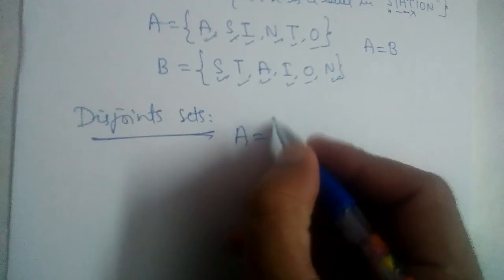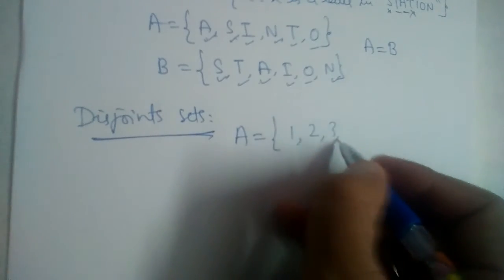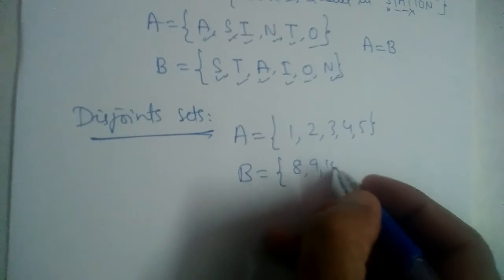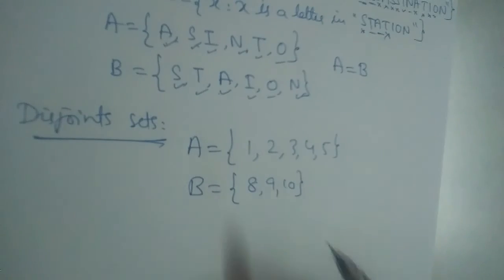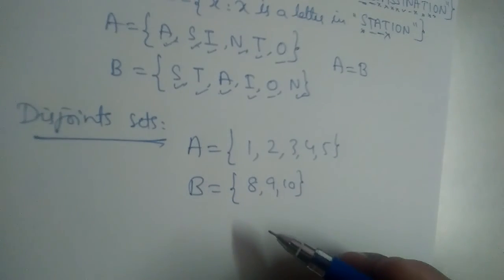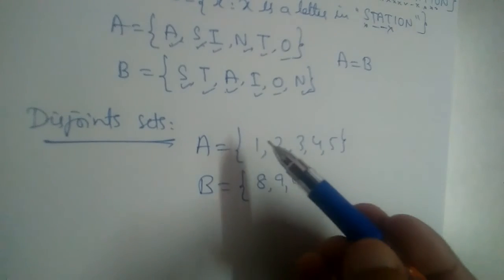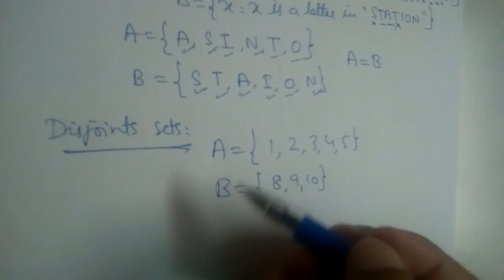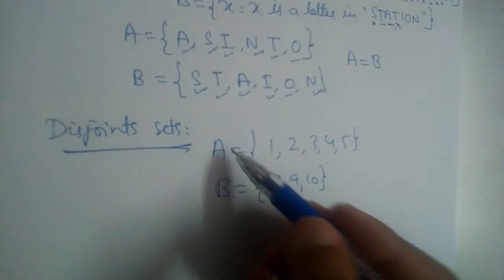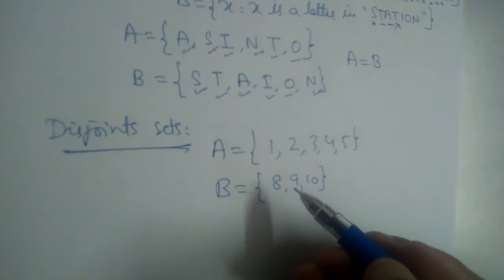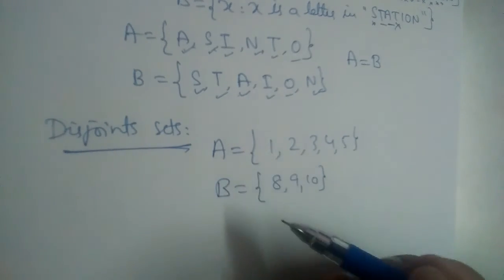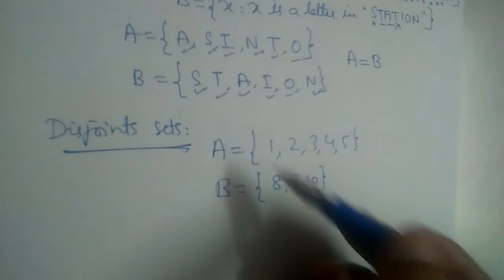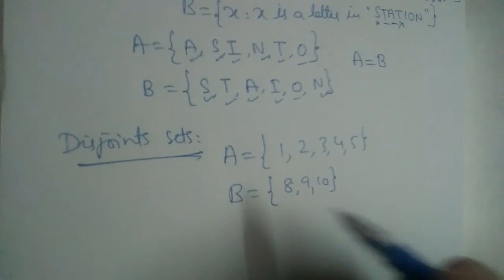For example, we have A is equal to 1, 2, 3, 4, 5 and B is equal to 8, 9, and 10. Not even a single element is same in these two sets, right? So such sets are called as disjoint sets. Set A and B are called as disjoint sets if a single element is also not matching, right? If there is no single element which is equal in both the sets, such sets are called as disjoint sets.